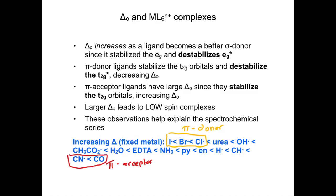That ends our lecture on molecular orbital diagrams for octahedral metal complexes. We should now be able to answer questions about reactivity and properties of complexes, having understood the origins of delta octahedral in the spectrochemical series and having these molecular orbital diagrams to work from.